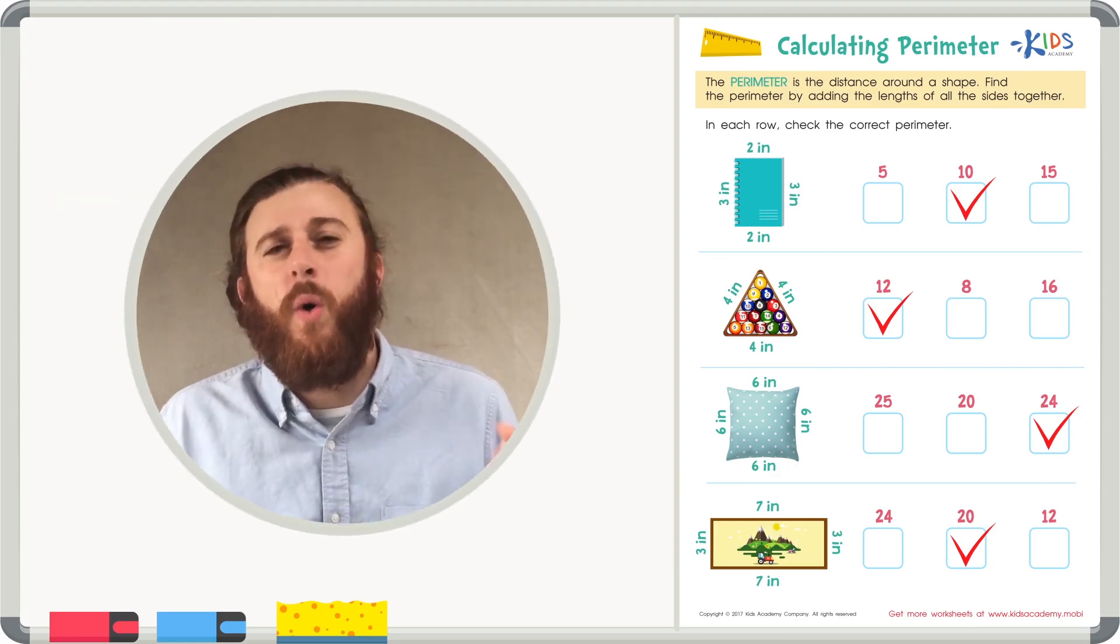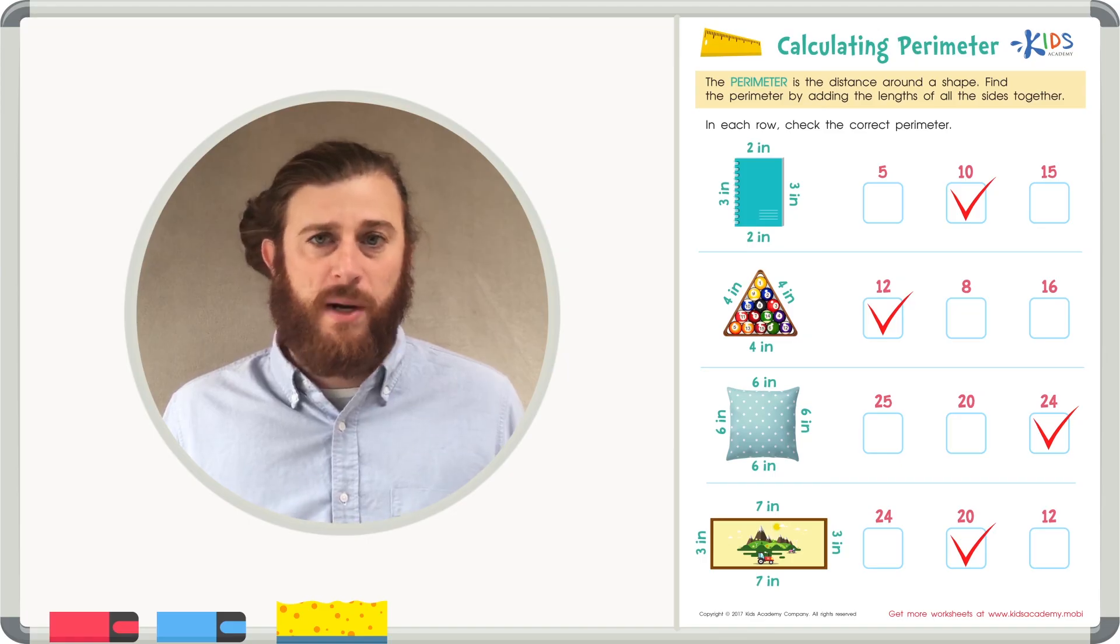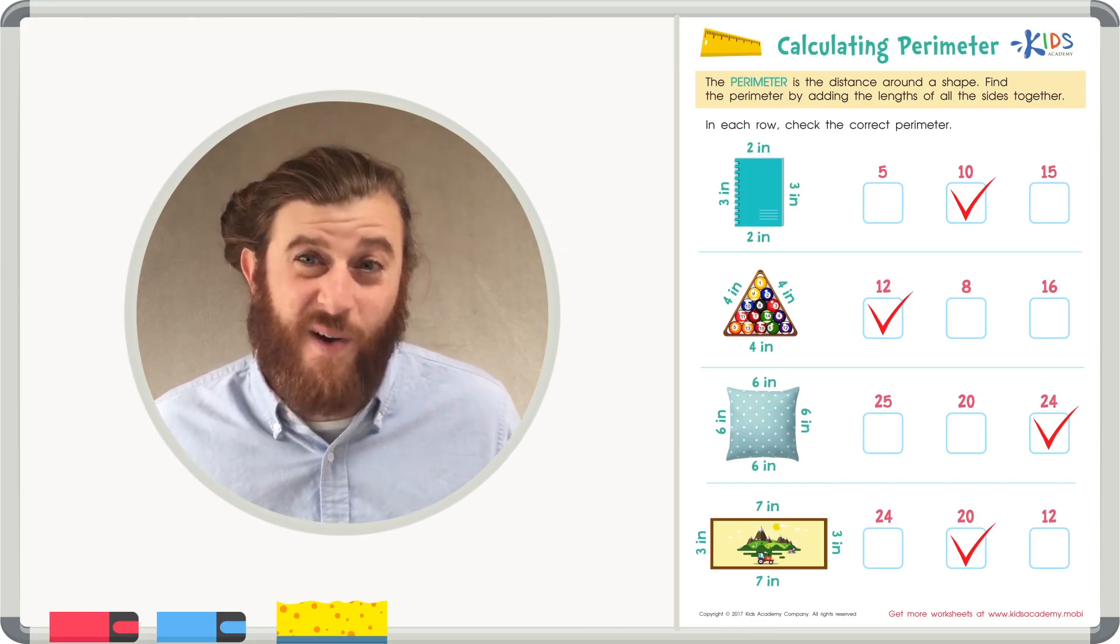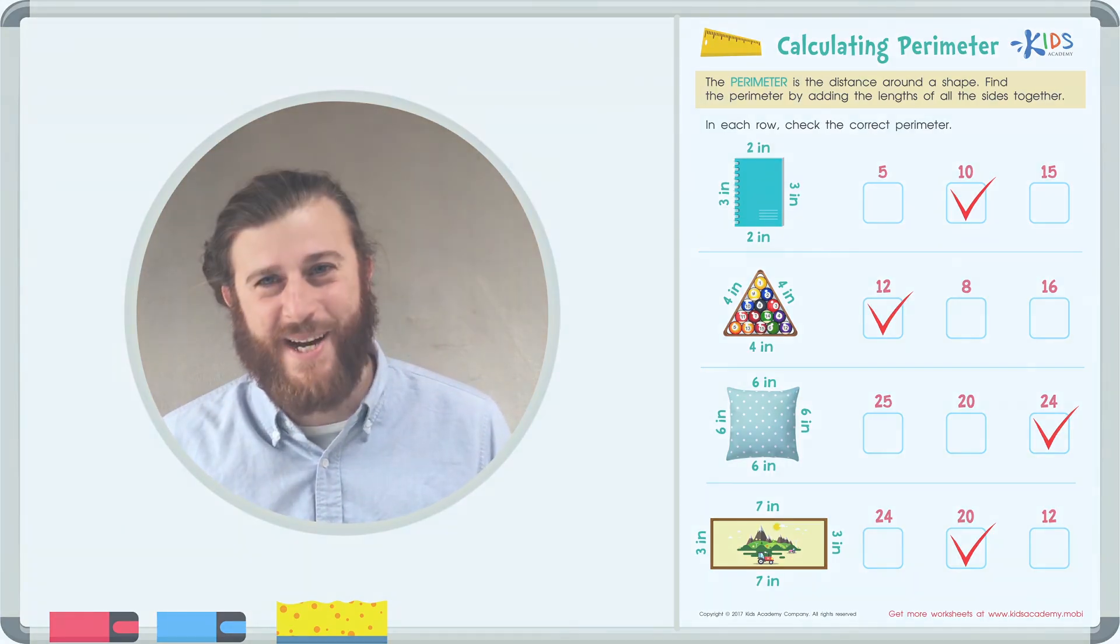So boys and girls, always write your perimeter problems easy. Try to make two simple problems, whether it's doubles or friendly numbers, and then add those sums together, meaning add all the sides together, to find the perimeter. Thanks for watching, boys and girls. We'll see you next time.